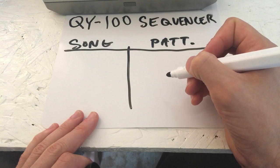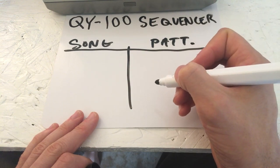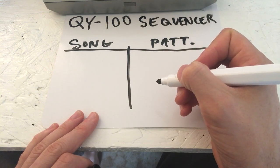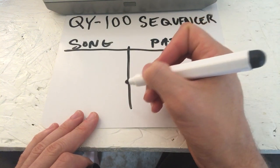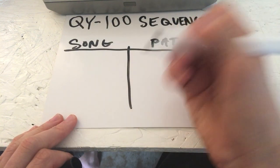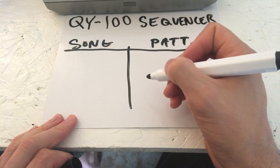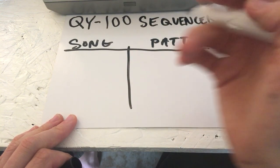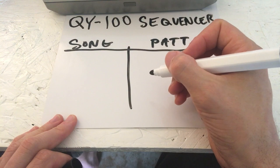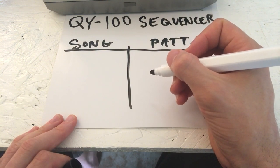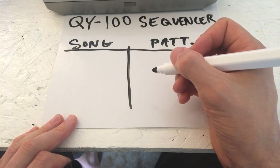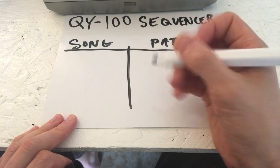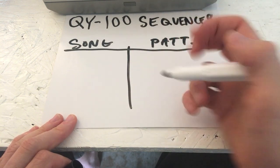With Yamaha sequencers, you can quantize to quarter note, eighth note, or whatever you want. But by default it's sort of just a MIDI recorder. It's 480 frames per quarter note, which means you can sort of play ahead or behind the beat a little bit.